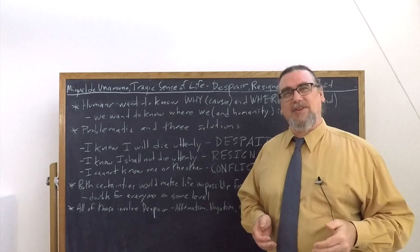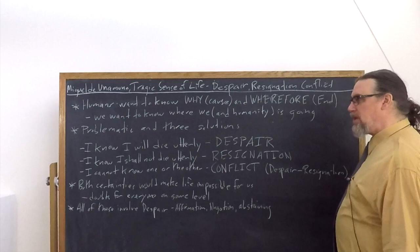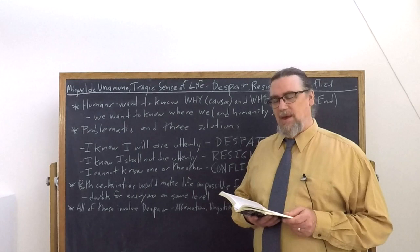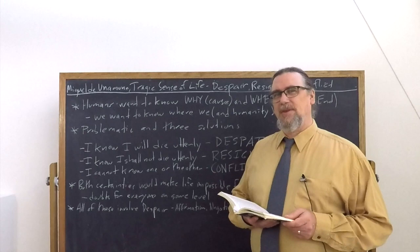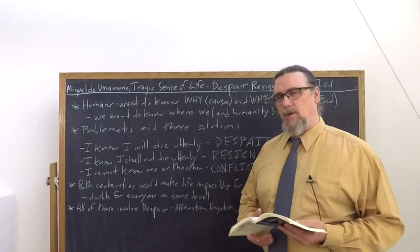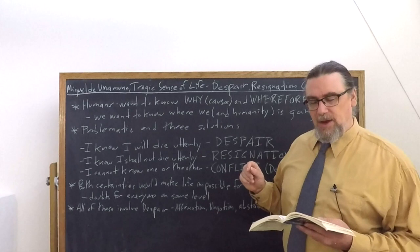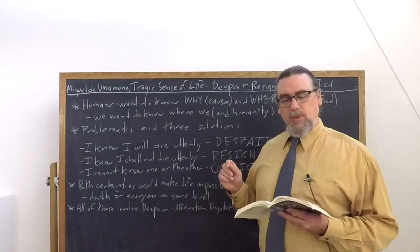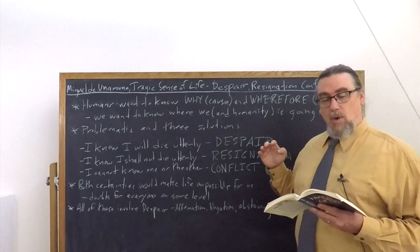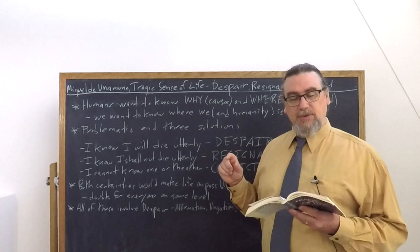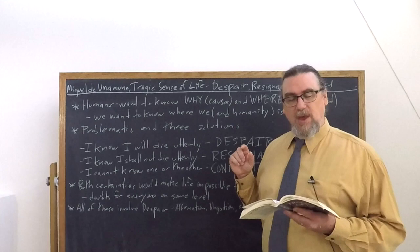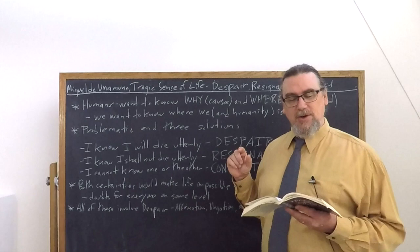In chapter six, In the Depths of the Abyss, Unamuno is going to expand this in two important ways. He says the absolute and complete certainty on the one hand that death is a complete, definite, irrevocable annihilation of personal consciousness, a certainty of the same order as the certainty that three angles of a triangle are equal to two right angles. Or on the other hand, the absolute certainty our personal consciousness is prolonged beyond death, including that strange addition of eternal rewards and punishments. Both of these certainties alike would make life impossible for us.